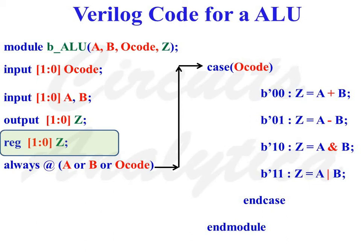reg [1:0] Z; specifies that Z is an output port of register type. Here all the ports A, B, O-Code and Z are 2-bit wide, with MSB denoted as bit number 1 and LSB denoted as bit number 0. For example, the input O-Code is specified as [1:0], meaning the MSB bit of O-Code is 1 and the LSB bit is 0. So the type of addressing used here is little-endian addressing.